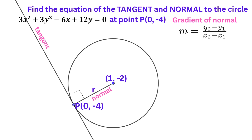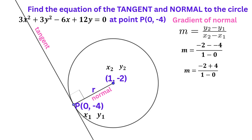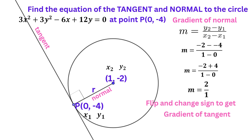So finding the equation of the radius is the same as finding the equation of the normal. To find the equation, we need to know its gradient. The gradient of the normal or radius is M equals (Y2 minus Y1) over (X2 minus X1). Substituting the respective values into the formula, we get the gradient of the normal to be 2 over 1. Now the gradient of the tangent is the negative reciprocal of the gradient of the normal, since the tangent and the normal are perpendicular to each other, so the gradient of the tangent would be negative one half.